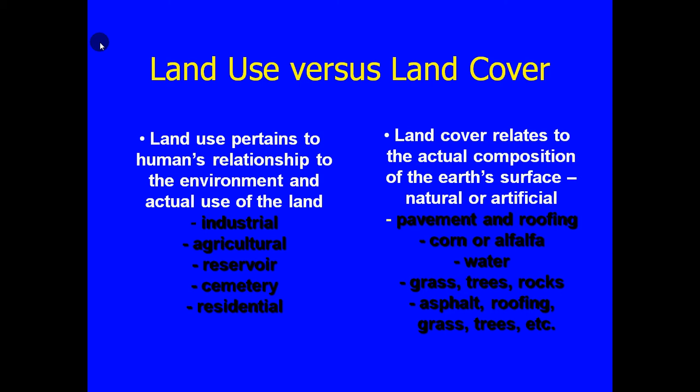Land use is a very human-related designation for the characteristic of the Earth's surface. Land use is oriented toward naming, classifying, or categorizing what people actually use the land surface for. Land cover, on the other hand, refers to the composition or characteristics of the Earth's surface, which has some subtle differences.